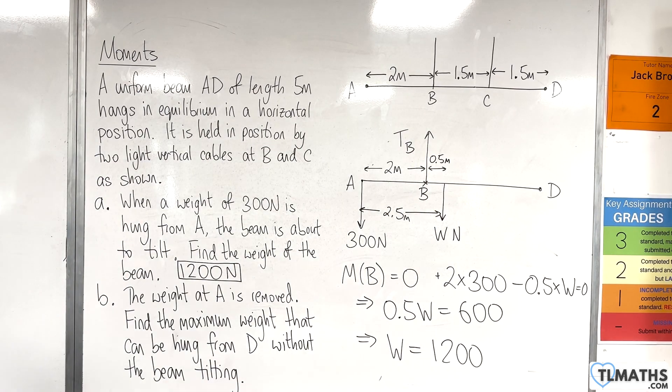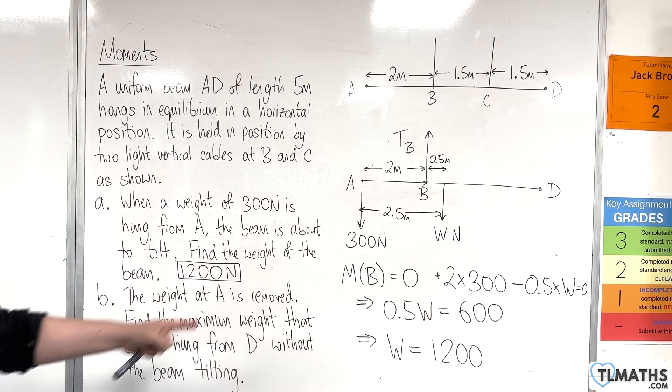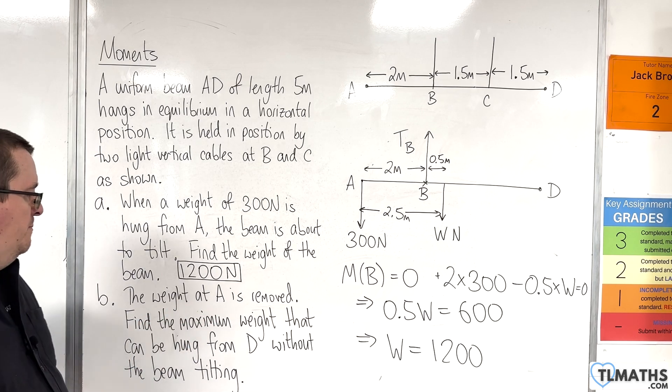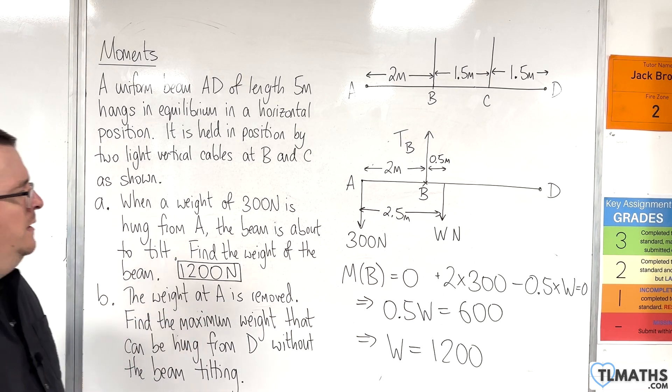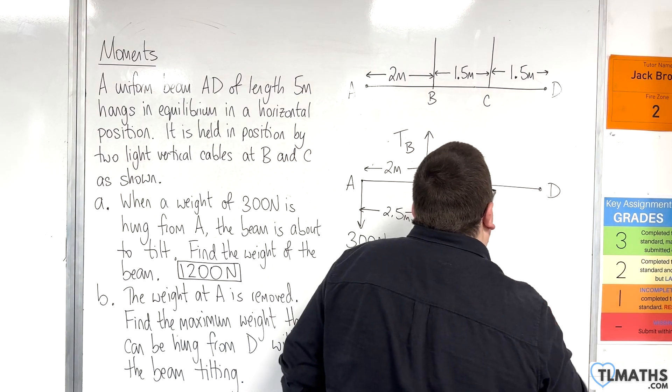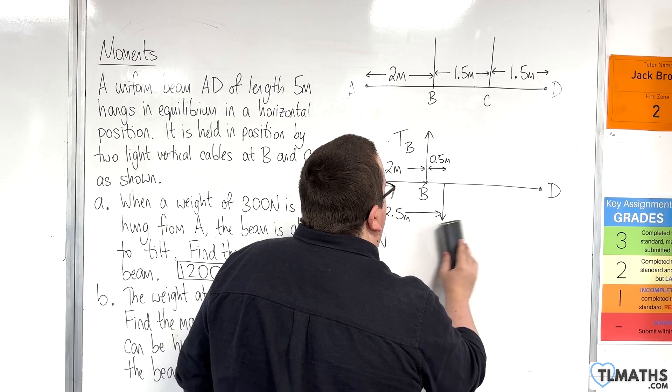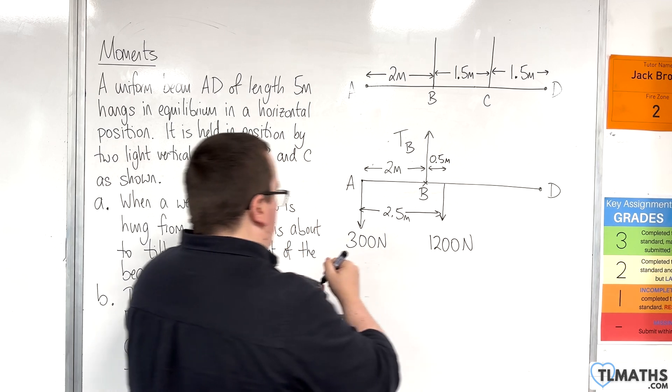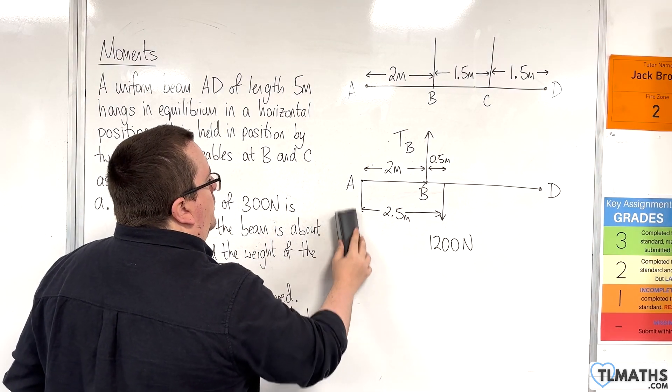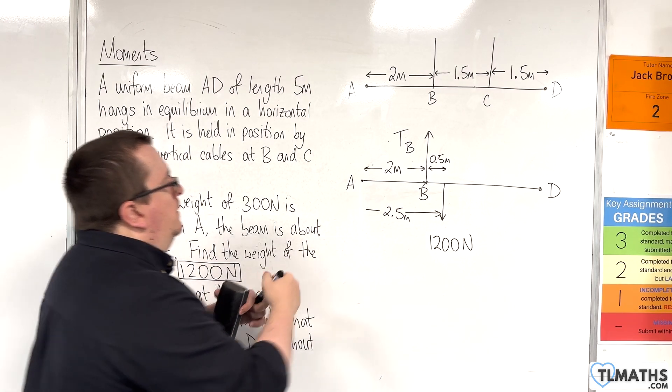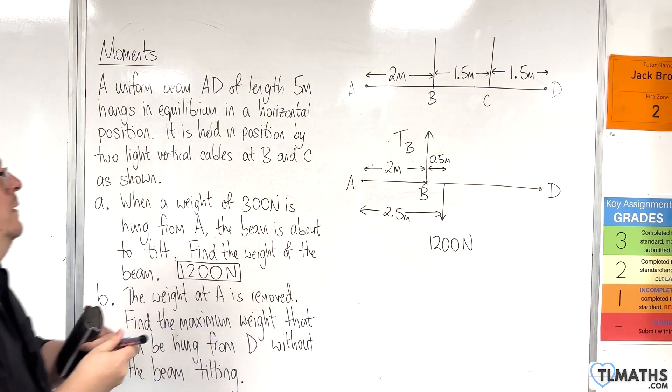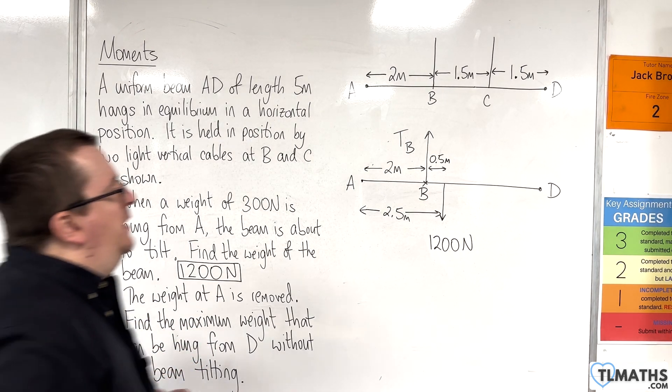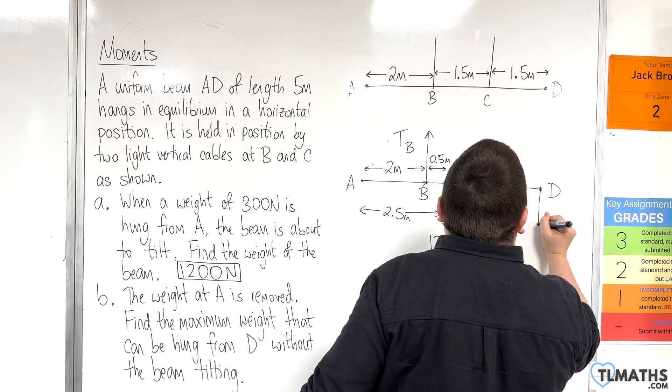So, next bit is now the weight at A is removed. Find the maximum weight that could be hung from D without the beam tilting. So let's adjust this. So we know that this is now 1,200 newtons. The weight at A has been removed. So that can go. Now, the maximum weight that could be hung from D without the beam tilting.